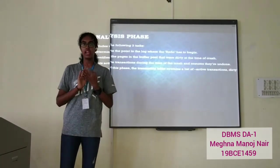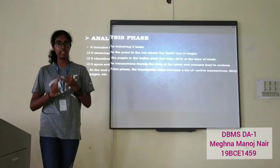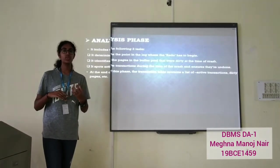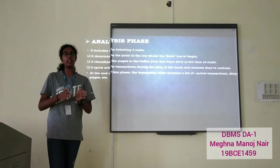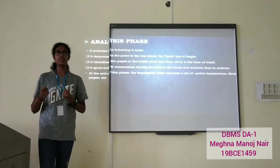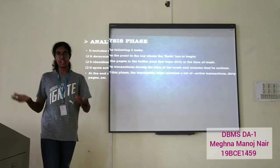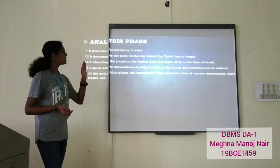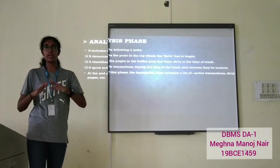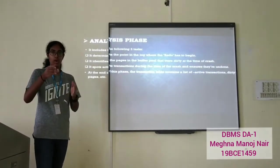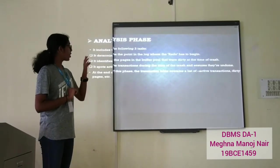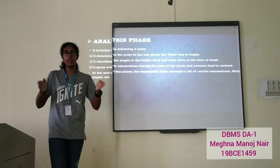Now we move on to the three phases of the ARIES algorithm: analysis, redo, and undo. The analysis phase, as the name suggests, refers to the procedure through which the algorithm analyzes and searches for all possible dirty pages. Dirty pages include all corrupted pages with data in an inconsistent form. It defines the point in the log where the redo process has to begin, looking for all anomalies present in the data, and tries to find out the particular point from which the crash occurred. It also spots all the anomalies and transactions which were active during the time of the system crash.